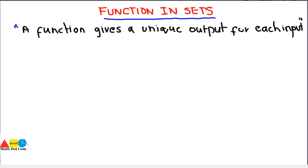A function basically gives a unique output for every input. As its definition indicates, whatever you give as input, the output will be unique. It is basically a special type of relation. In order to understand its concept, there are two conditions that are required for a function.